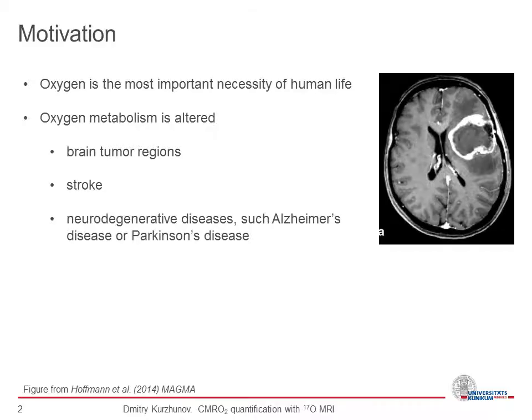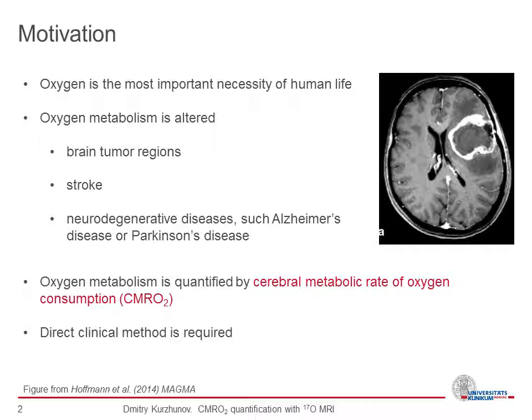Oxygen is the most important necessity of human life. We can't live without oxygen and oxygen metabolism is altered in various diseases. In brain tumor regions, for example, here on the right you see the proton MRI images of a glioblastoma tumor patient, and after gadolinium injection a severe tumor region can be seen. Oxygen metabolism is also altered in stroke and in neurodegenerative diseases such as Alzheimer's disease or Parkinson's disease. Those diseases account for about 30% of deaths in the United States and in Europe, so it is really desirable to quantify the oxygen metabolism and to directly clinically measure it. The metabolism can be quantified by cerebral metabolic rate of oxygen consumption, CMO2.